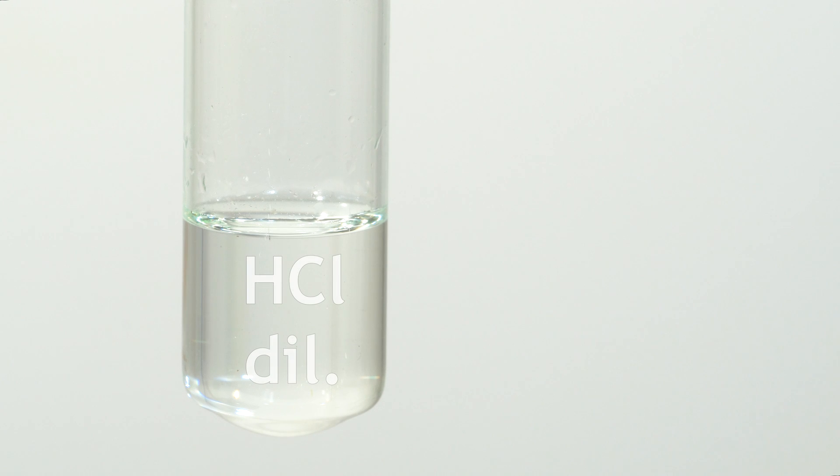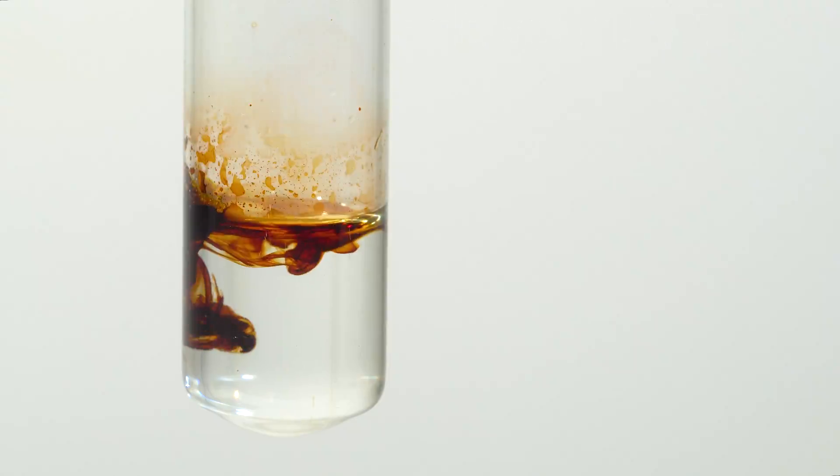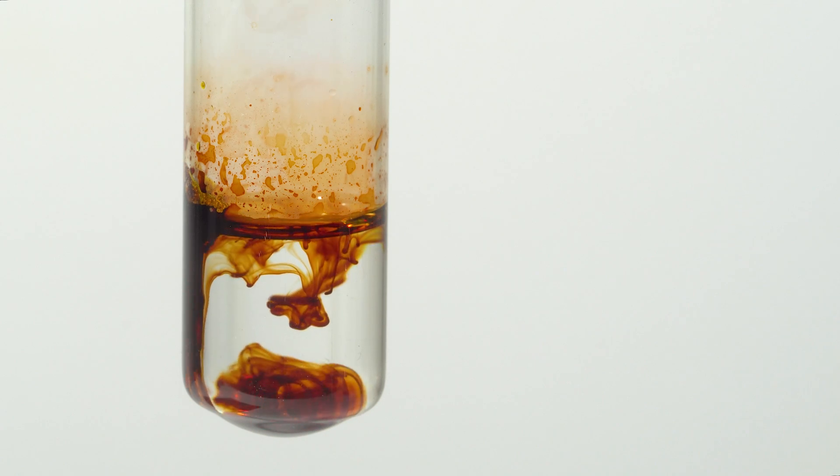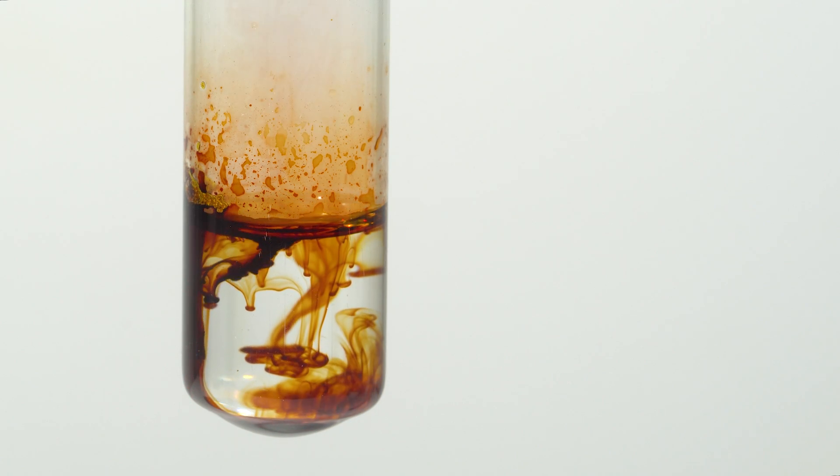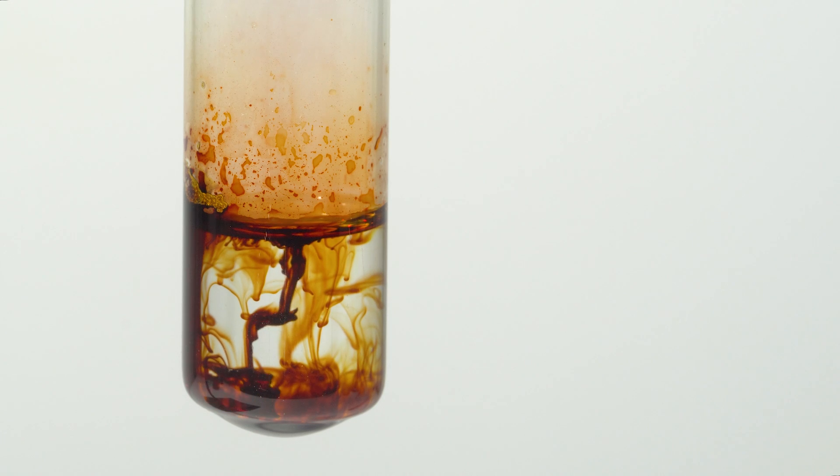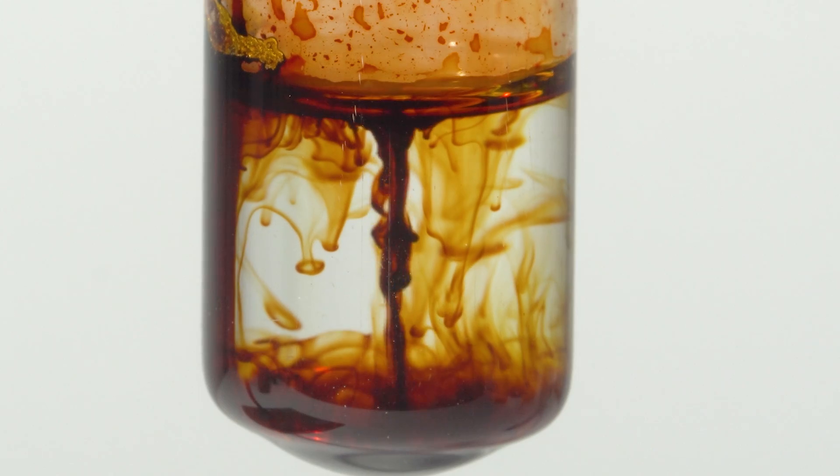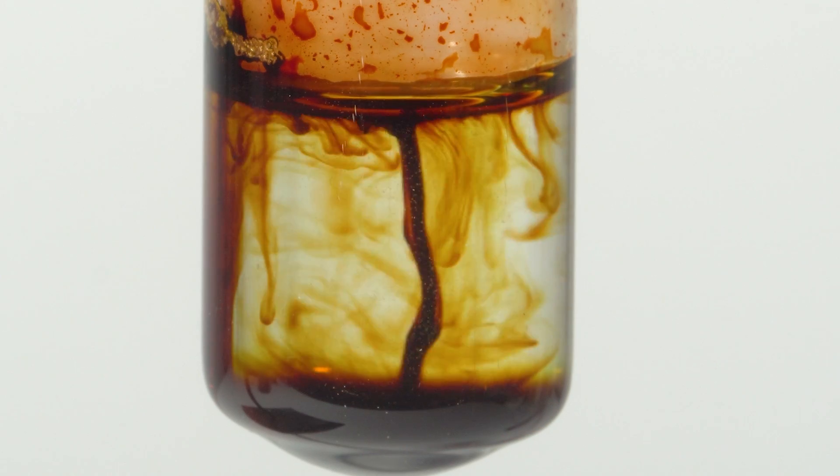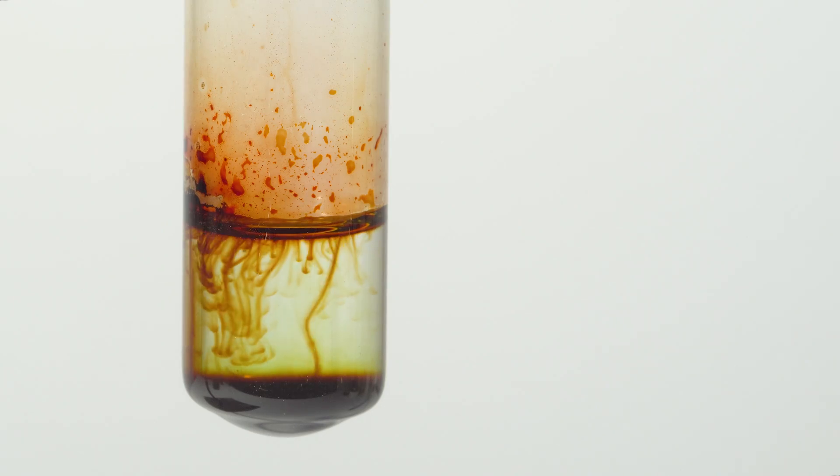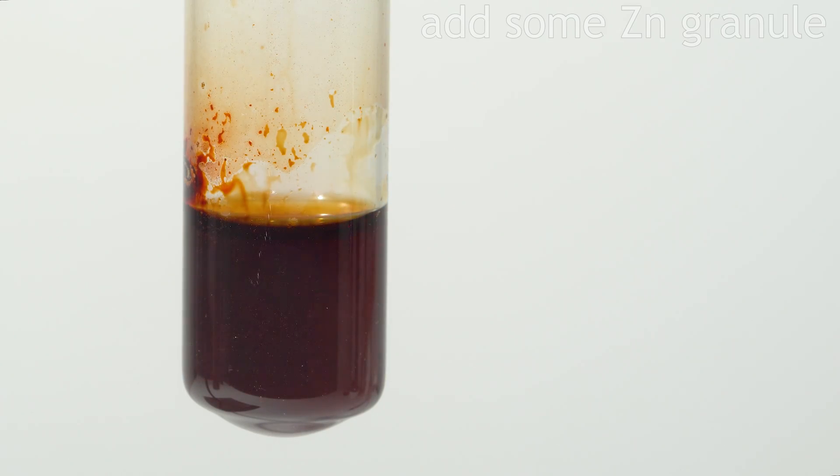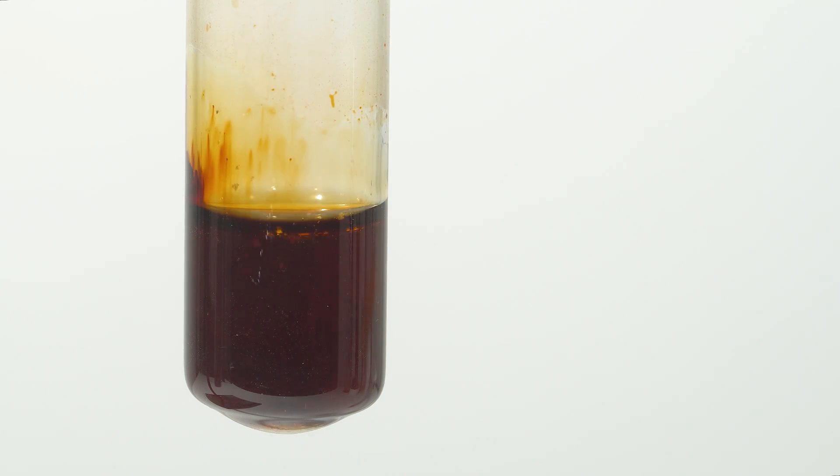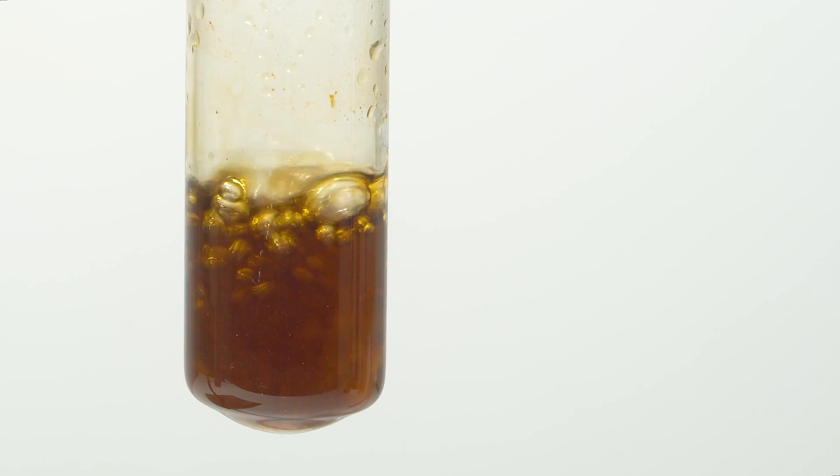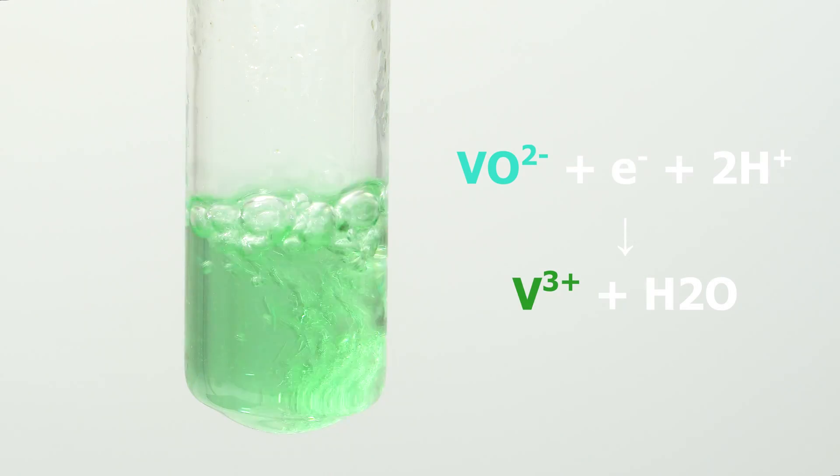This is a classic reduction reaction of vanadium cations with a vivid color change. I simply add a zinc granule to a solution of vanadium tetrachloride in hydrochloric acid, and the vanadium is reduced to the 2-plus oxidation state, which is characterized by a purple color.